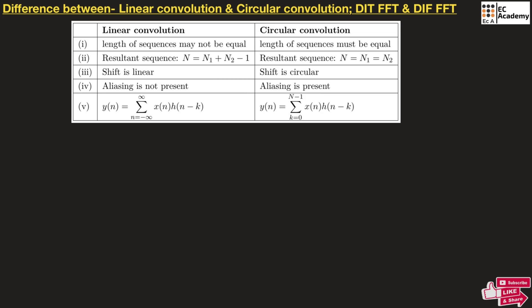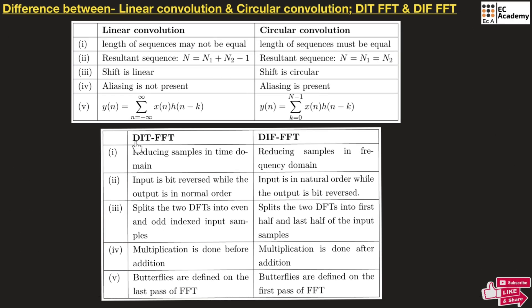But in circular convolution, length of the sequence must be equal. Hence, the resultant sequence can be given as n equals n1 that will be equal to n2. The shift is circular and aliasing is present in circular convolution. And this is the mathematical representation of circular convolution. Now, let us understand the difference between DIT-FFT and DIF-FFT.